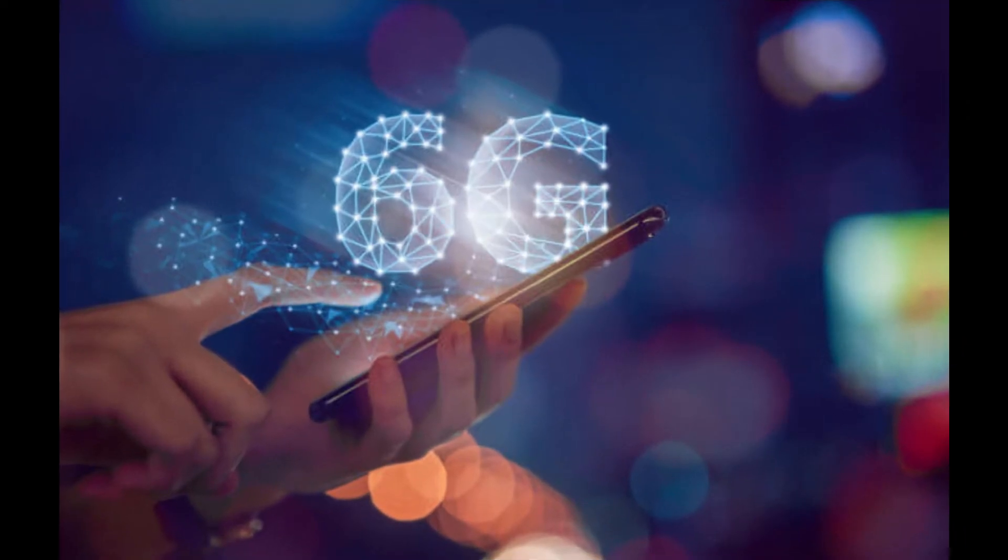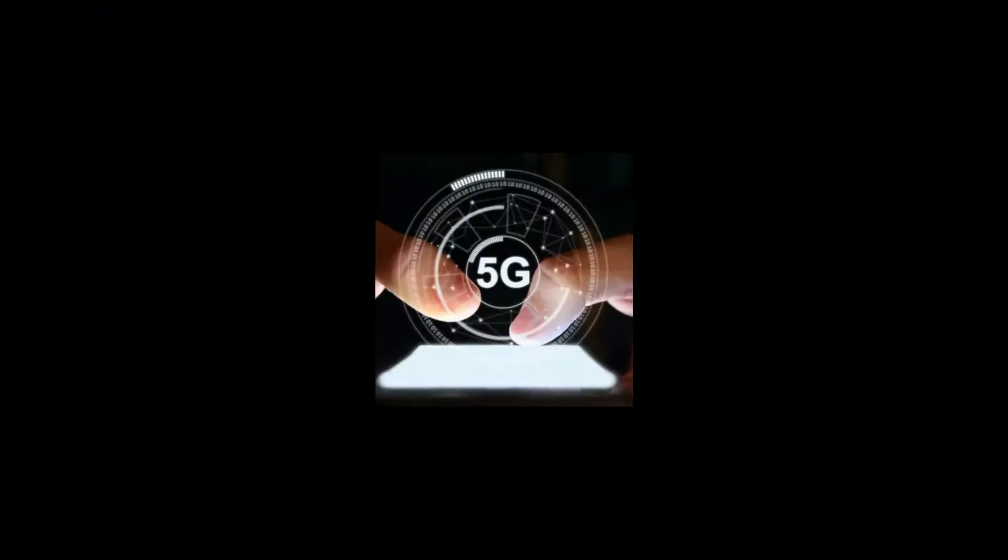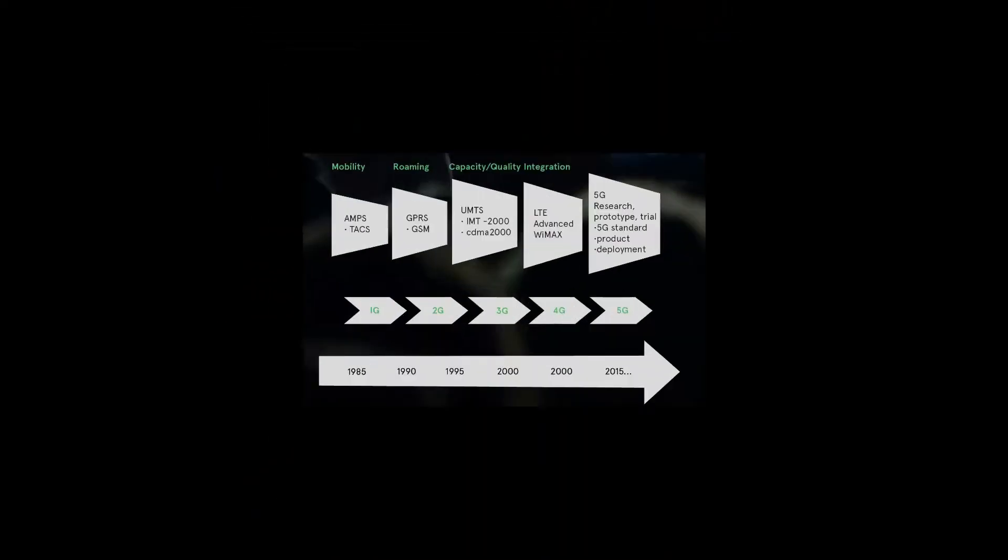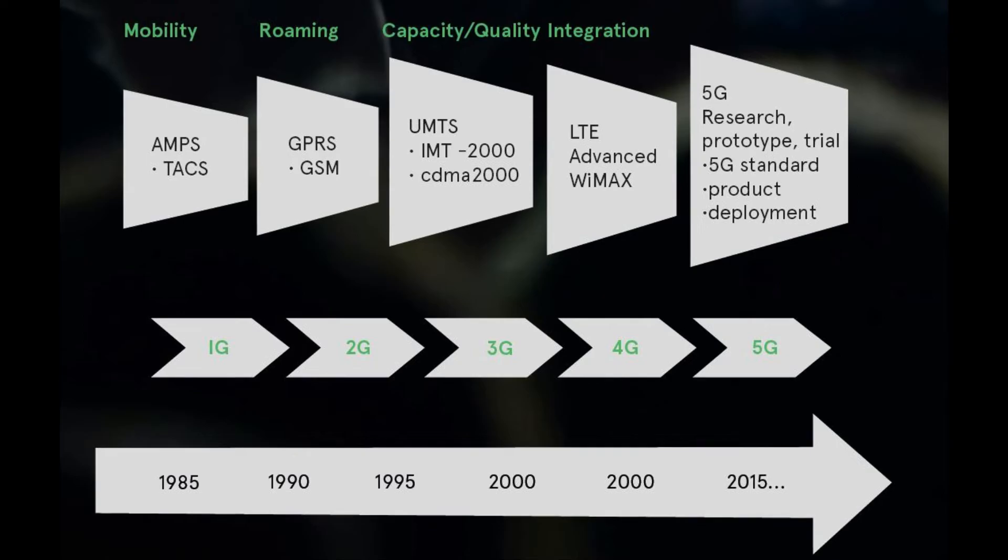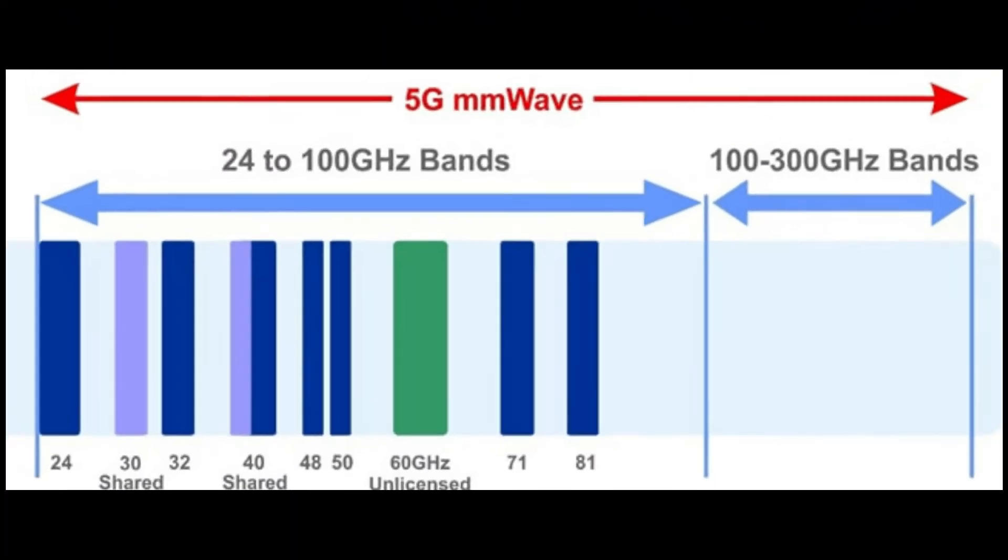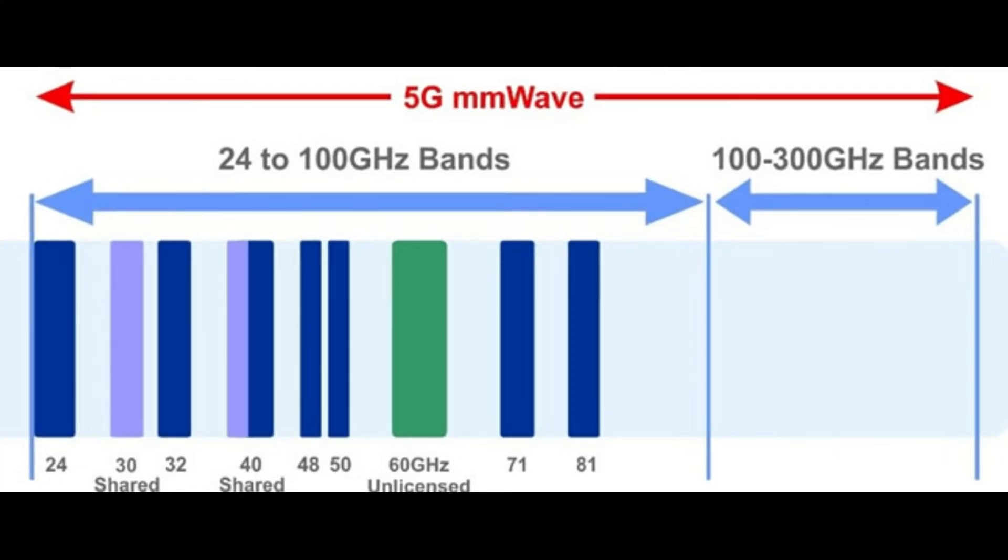First some background on 6G. As a refresher, 5G, what is considered the fifth and most recent generation of cellular broadband networks, is still in its infancy. True 5G networks operate in millimeter wave frequencies between 30 and 300 gigahertz, which are 10 to 100 times higher frequency than previous 4G cellular networks.